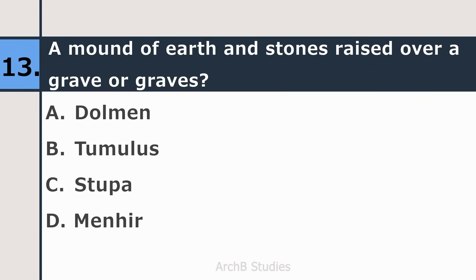Thirteenth question: amount of earth and stones raised over a grave or graves — Dolmen, Tumulus, Stupa, or Menhir? The right answer is Tumulus. Dolmen is a prehistoric stone structure used in burial chambers. Stupa is a hemispherical mount-like structure used in Buddhist monuments. Menhir is an upright stone placed in the ground by humans in prehistoric age.